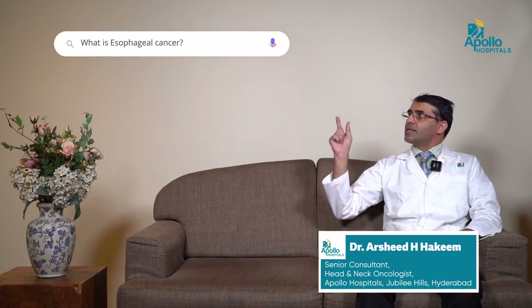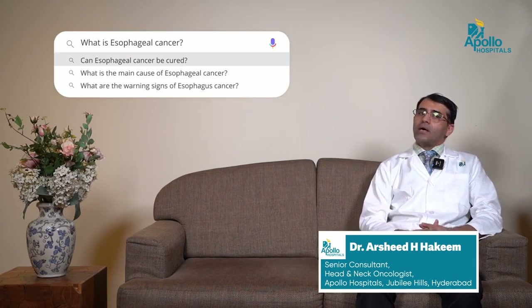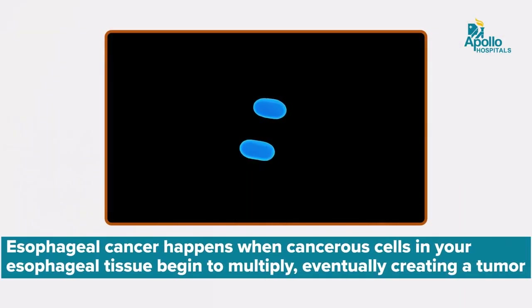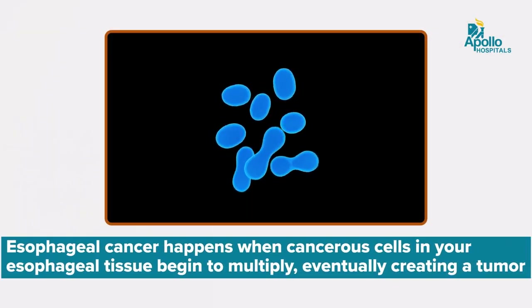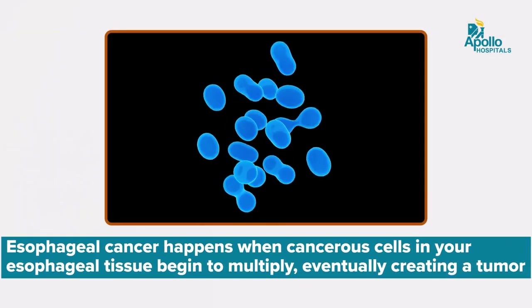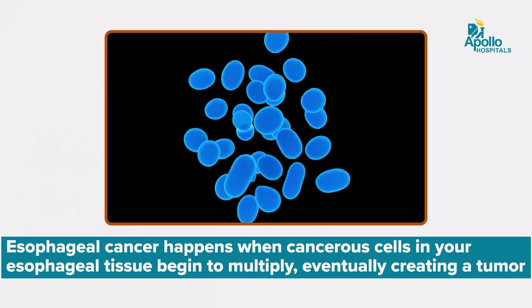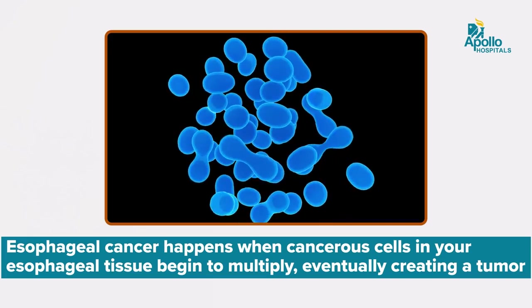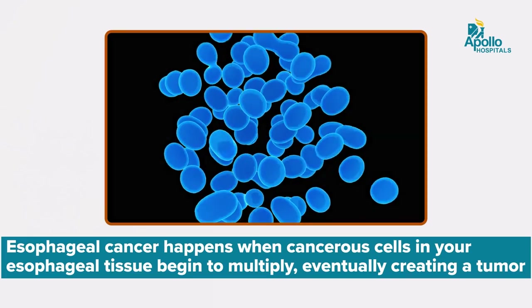What is esophageal cancer? Esophageal cancer is an abnormal growth of cells in the esophagus. It is caused by cell mutation, which results in an uncontrolled growth of cells and presents with different symptoms.